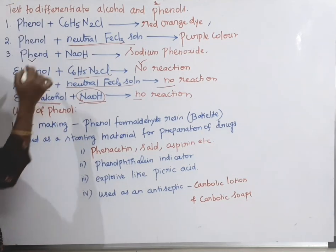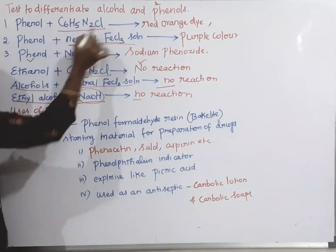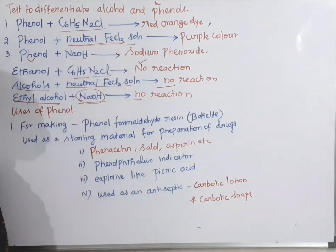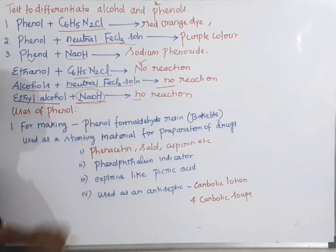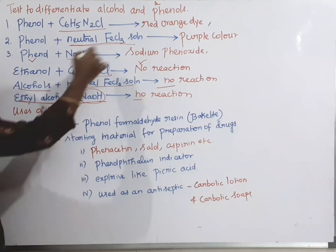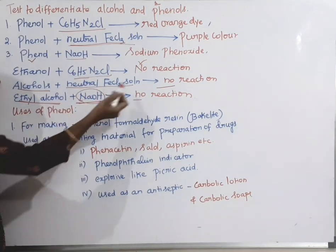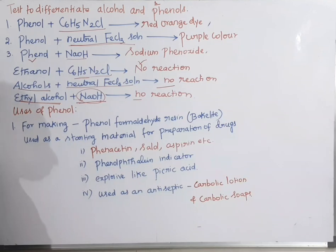These are the three tests used for differentiating phenols and alcohols: the first one is the reaction with benzene diazonium chloride, the second one with neutral ferric chloride solution, and the third one is the reaction with sodium hydroxide. In all these tests, phenol gives a product or coloration but alcohols do not.